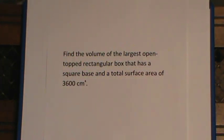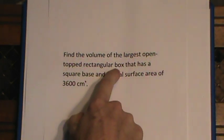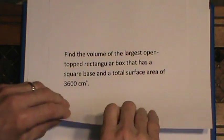The first one is to find the volume of the largest open topped rectangular box that has a square base and we're given the total surface area of 3600 square centimeters.